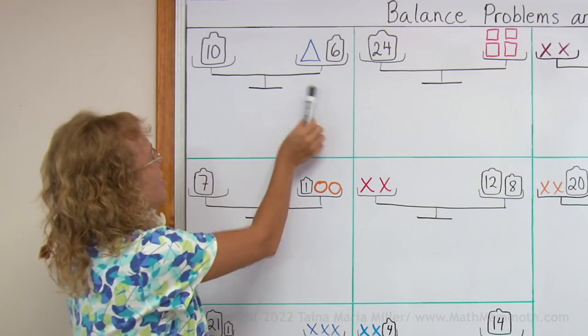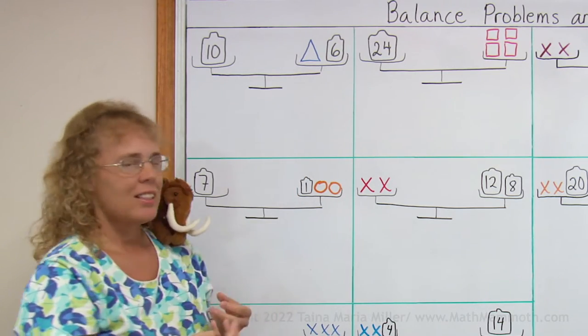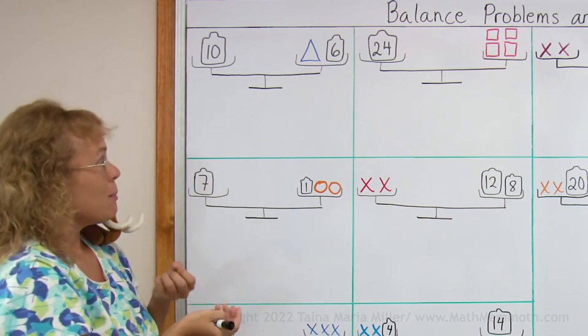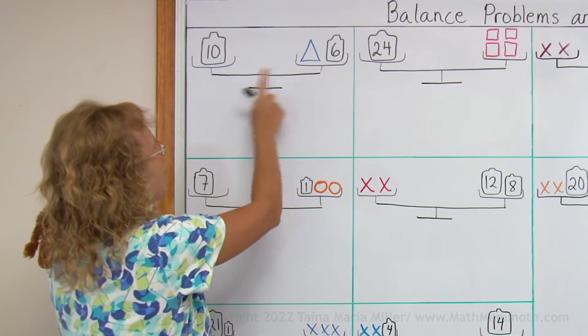I have a balance here, a pan balance or scales. And in these two pans there are weights and this scale is balanced. That means that there is an equal weight in both of these pans.